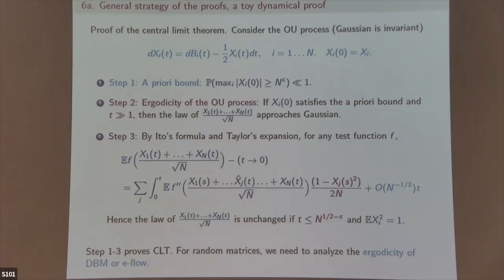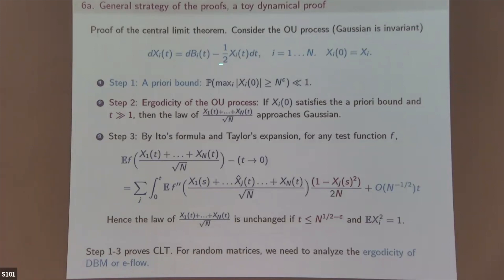With five minutes left, I sketch the general proof of universality. I prove it in the style of a central limit theorem using an Ornstein-Uhlenbeck process: dX_i = dB_i − (1/2) X_i dt. This has Gaussian as its invariant measure. Step 1: a trivial a priori estimate — X_i cannot be too big, otherwise there is small probability due to the exponential weight.